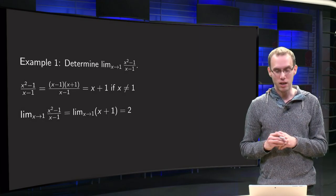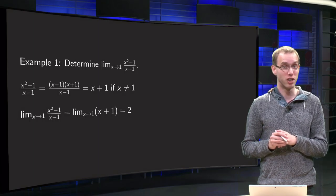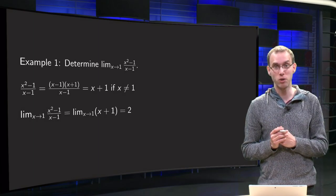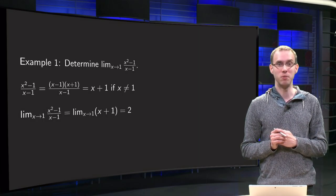Well, if you would plug in x equals 1 directly, you get 1 minus 1 equals 0 over 1 minus 1 equals 0, you get 0 over 0, so that's not going to work. So, what can we do?